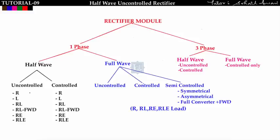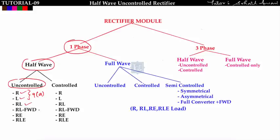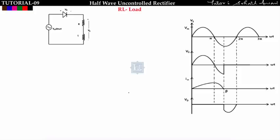In the previous lecture we covered the single phase half wave uncontrolled rectifier for R load and L load (lecture 9a). In this lecture we will cover the single phase half wave uncontrolled rectifier for RL load and RL with freewheeling diode — this is lecture 9b. Let us see the first slide: the half wave uncontrolled rectifier for RL type of load.